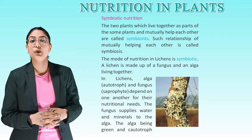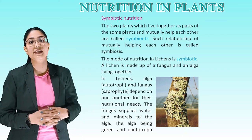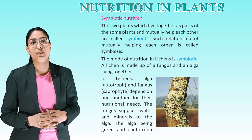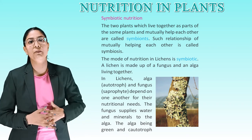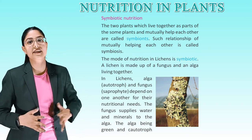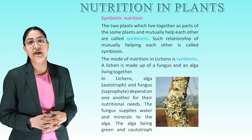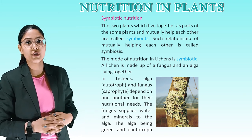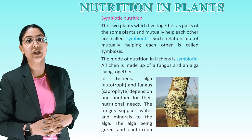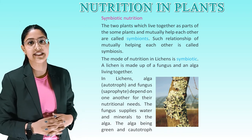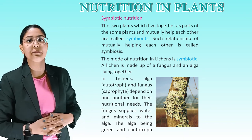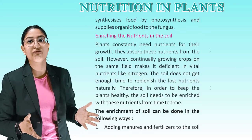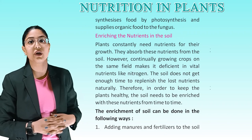Symbiotic nutrition. Two organisms that live together and mutually help each other are called symbionts. Such a relationship of mutually helping each other is called symbiosis. The mode of nutrition in lichens is symbiotic. A lichen is made up of a fungus and an alga living together. In lichens, the alga (an autotroph) and the fungus (a saprotroph) depend on one another for their nutritional needs. The fungus supplies water and minerals to the alga. The alga, being green and autotrophic, synthesizes food by photosynthesis and supplies organic food to the fungus.